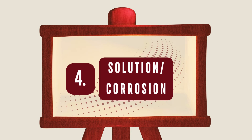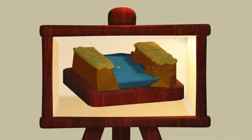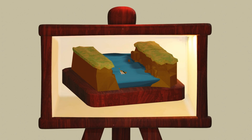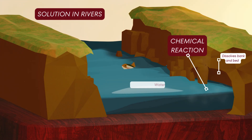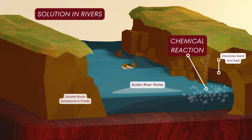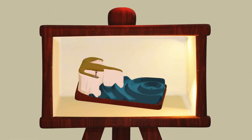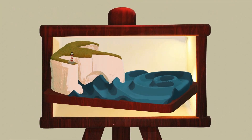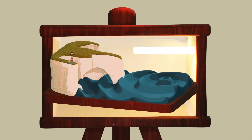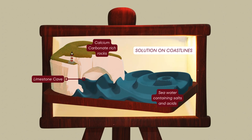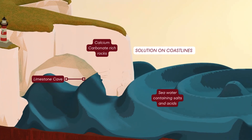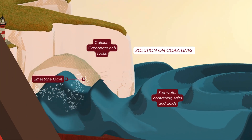Step four: solution, also known as corrosion, is a chemical process where water dissolves certain types of rock. In rivers, acidic water reacts with soluble rocks like limestone and chalk, gradually dissolving them. On coasts, seawater contains salts and acids which break down cliffs made of calcium carbonate-rich rocks. Solution contributes to the formation of limestone caves and other coastal landforms.